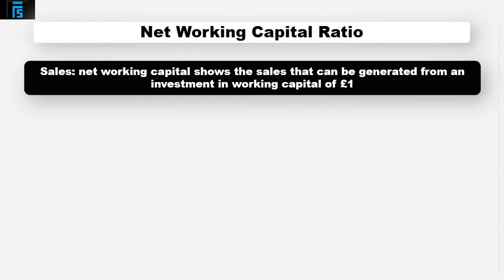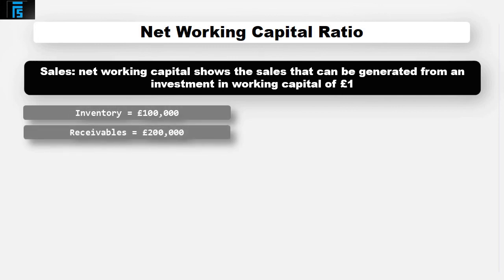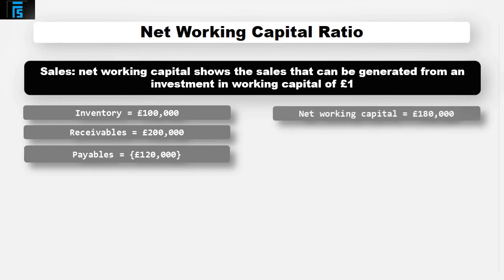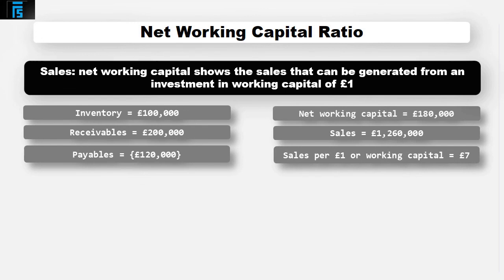The sales to net working capital ratio shows the sales that can be generated from an investment in working capital of £1. For example, if a company has inventory of £100,000, receivables of £200,000 and payables of £120,000, this equates to net working capital of £180,000. If sales are £1,260,000, this suggests that £1 of investment in working capital generates £7 of sales.